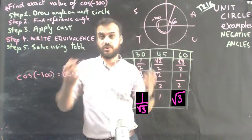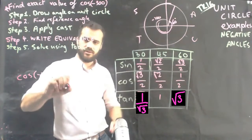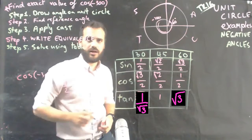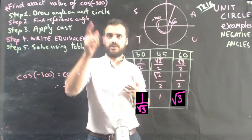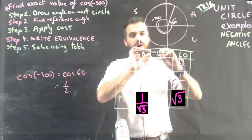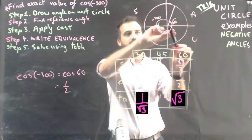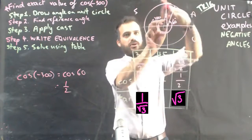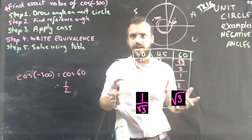And we're in the all quadrant, so it's positive. Cos 60 is one half. Dealing with negative angles is not going to be difficult at all. The only thing that changes is this first step — move in this direction, not this direction. Easy.